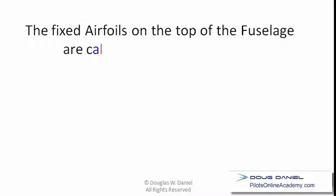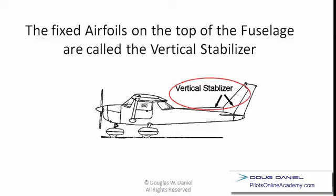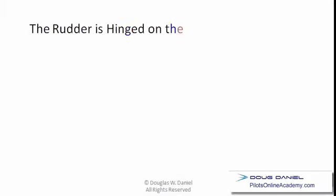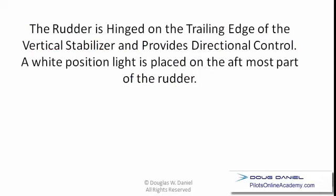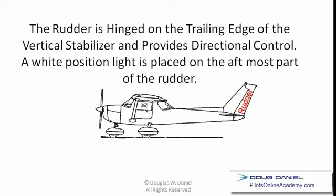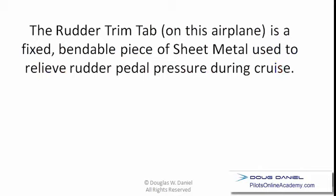The fixed airfoils on the top of the fuselage are collectively called the vertical stabilizer. The rudder is hinged on the trailing edge of the vertical stabilizer and provides directional control. A white position light is placed on the aft-most part of the rudder on this airplane, though sometimes they're in other places. The rudder trim tab on this airplane is a fixed bendable piece of sheet metal used to relieve rudder pressure during cruise flight.